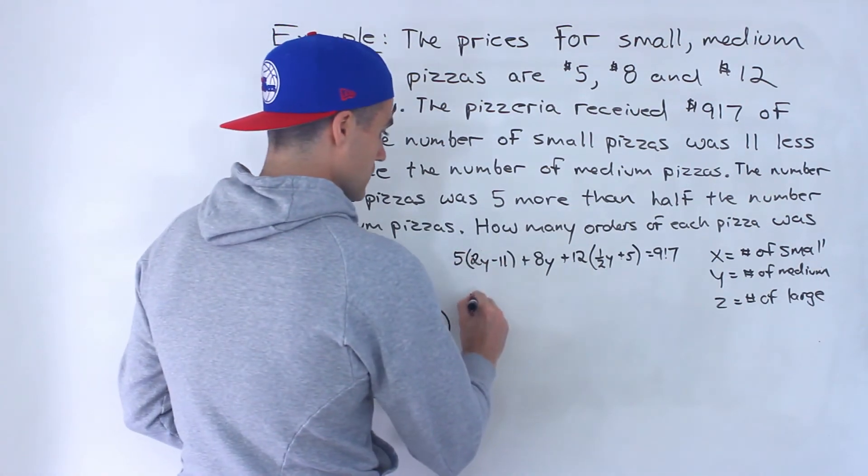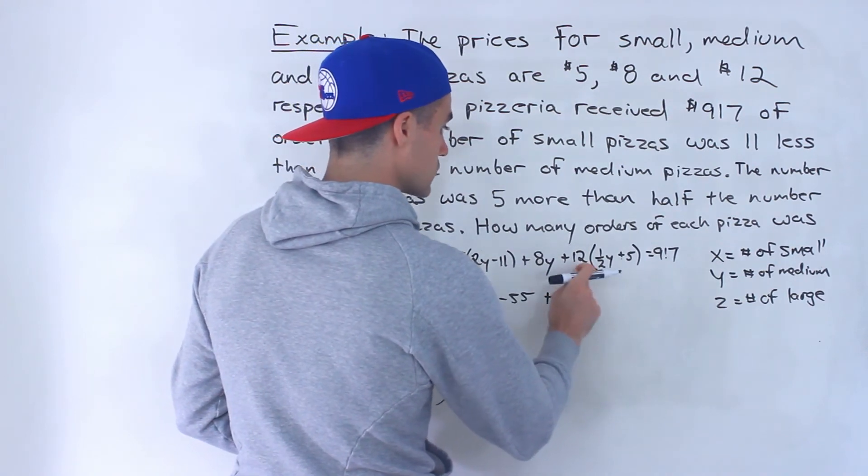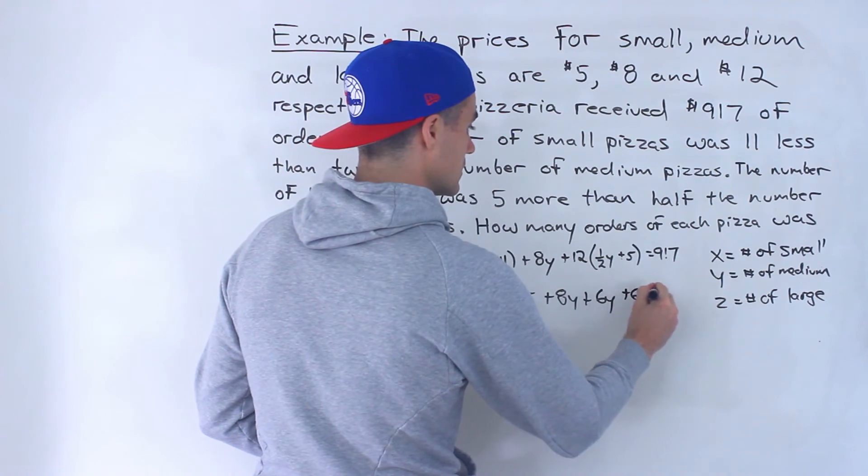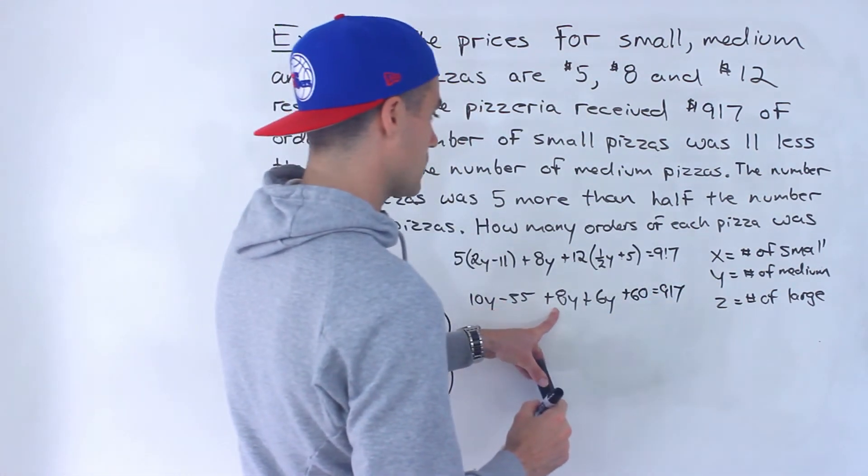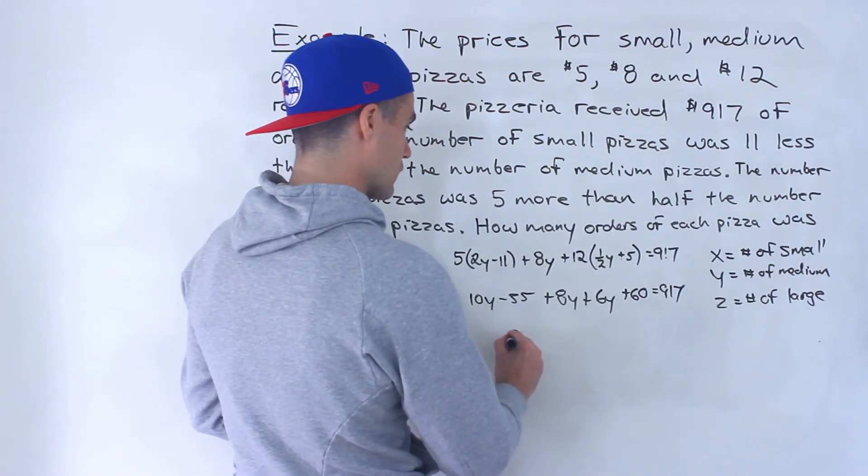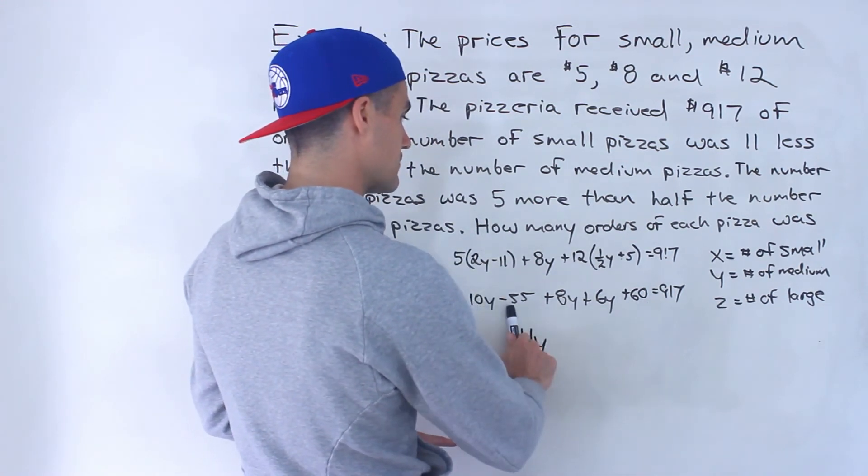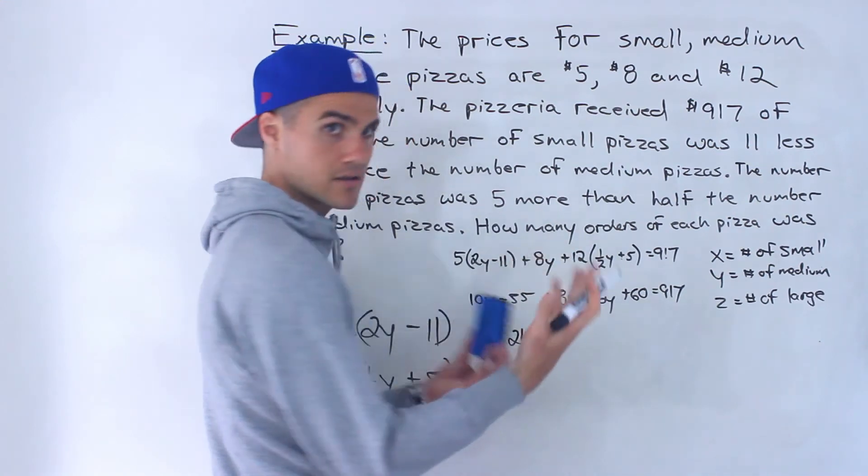So if we solve this we would have 10y minus 55 distribute there, plus 8y, plus 12 times a half is 6, 12 times 5 is 60, equals 917, like that. So 10y plus 8y plus 6y would give us 24y. And then we would have 60 minus 55, which is positive 5.